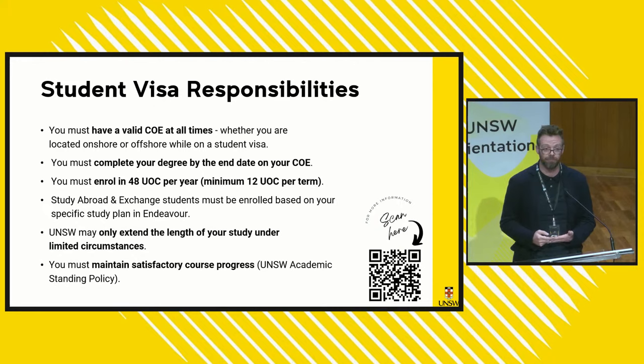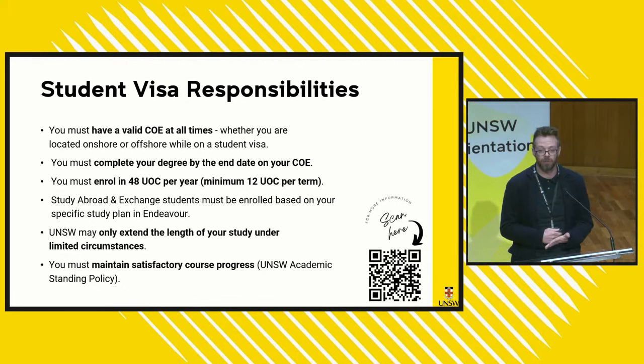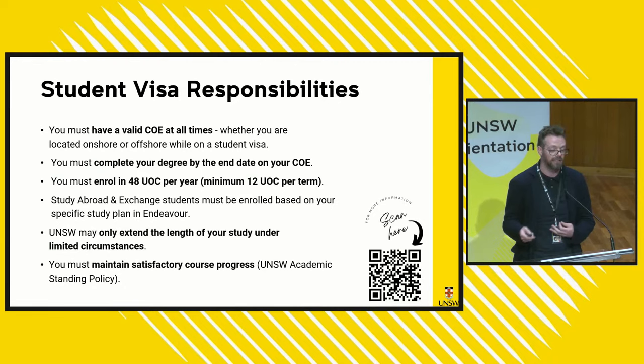UNSW has an academic standing policy — you can find it by logging into myUNSW and reading through what the policy entails. The idea is that you're meant to be making satisfactory progress by passing courses as you go through each term. If you're not making satisfactory progress, the university will write to you inviting you to come to an interview or consultation with an academic advisor or possibly a member of the student support team.